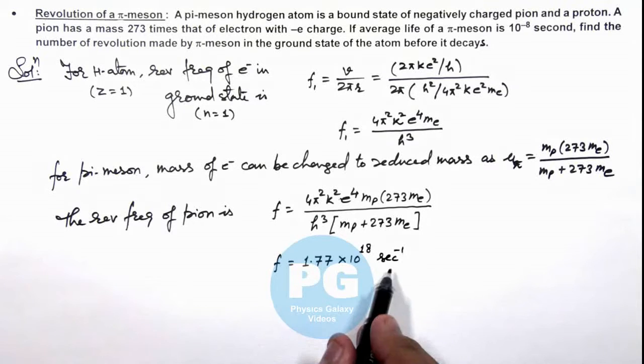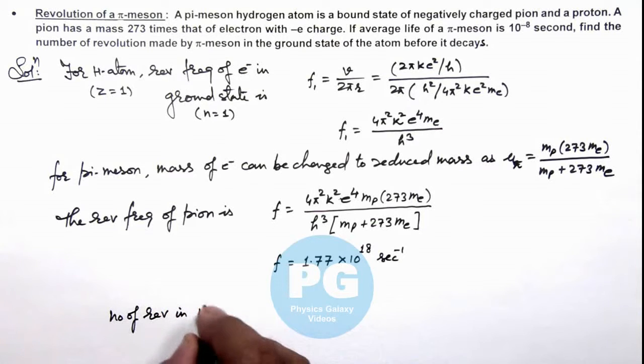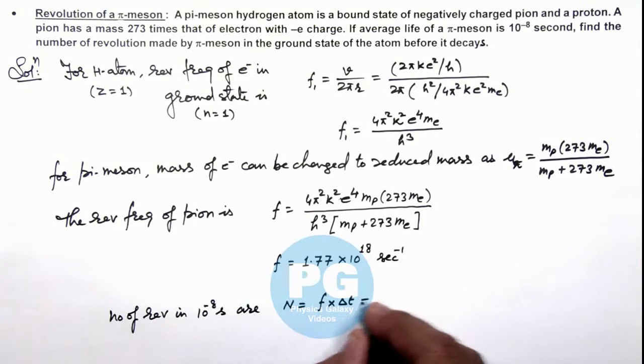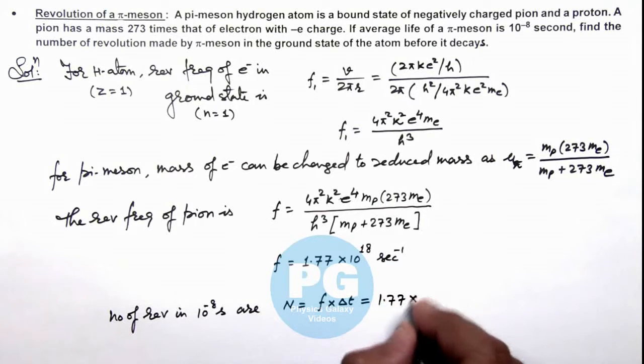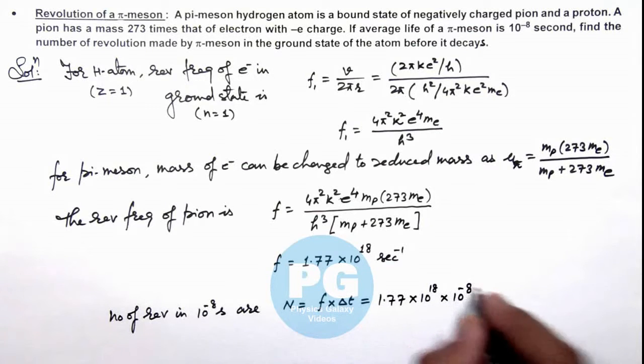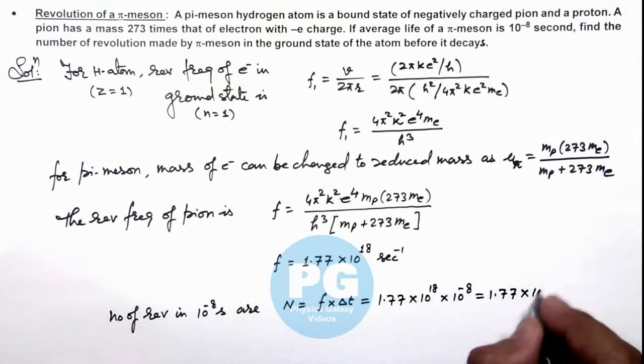So if this is the revolution frequency, we can calculate the number of revolutions in 10^-8 second. This N can be given as f × Δt, which is 1.77 × 10^18 multiplied by 10^-8, which is 1.77 × 10^10 revolutions. That will be the result of this problem.